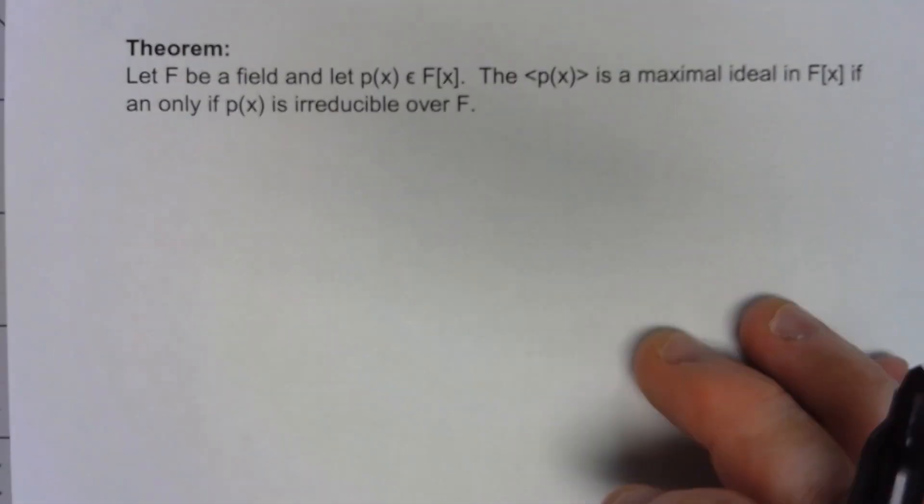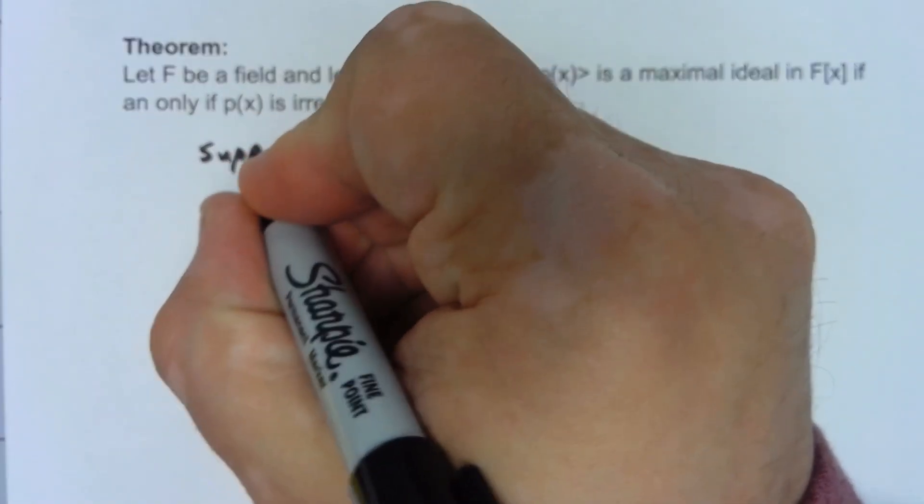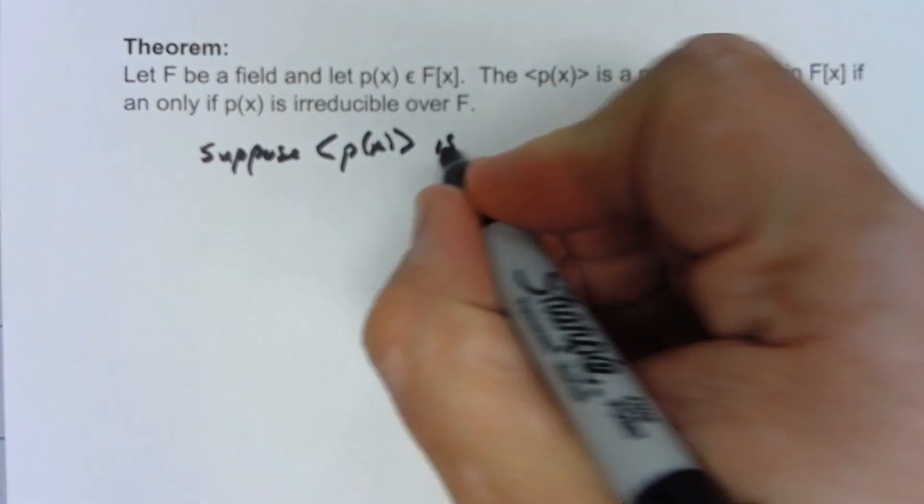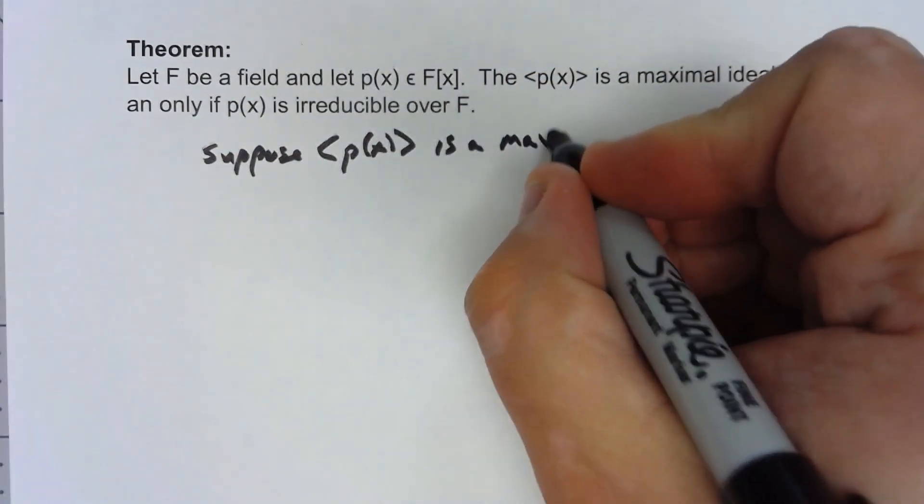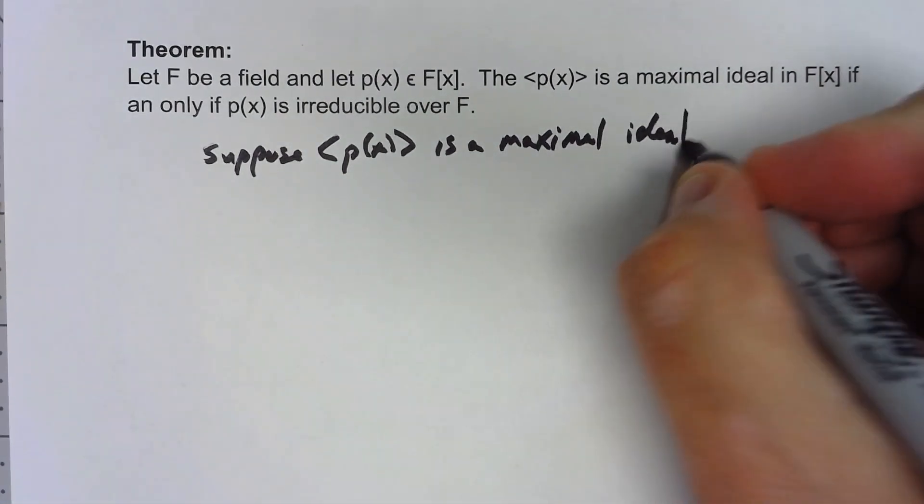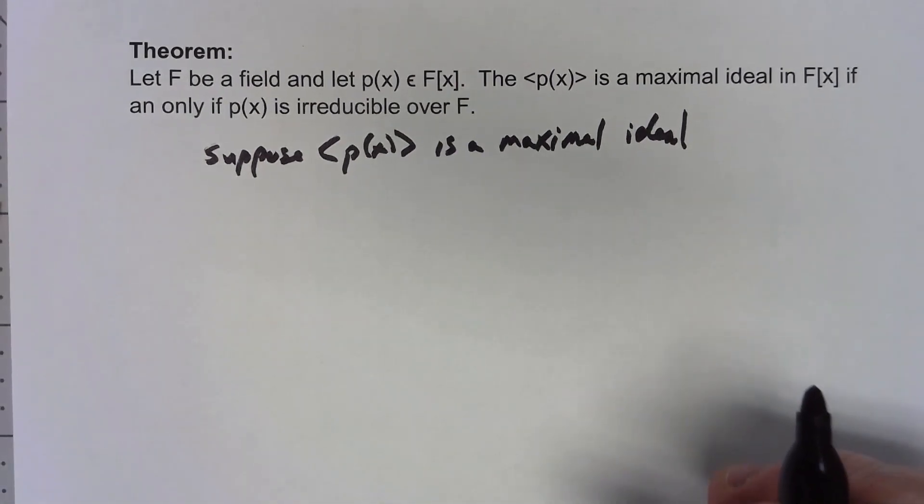So first of all, to prove this, let's suppose that the ideal generated by p(x) is a maximal ideal. If we have that, then a couple of things.